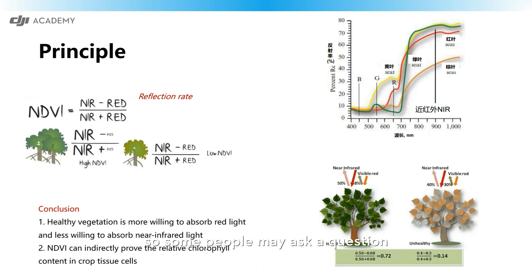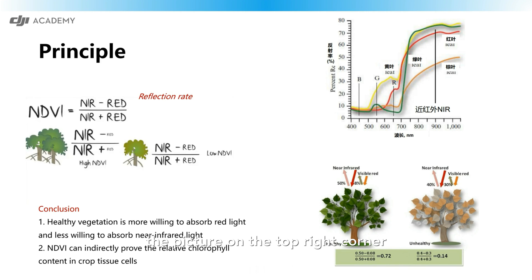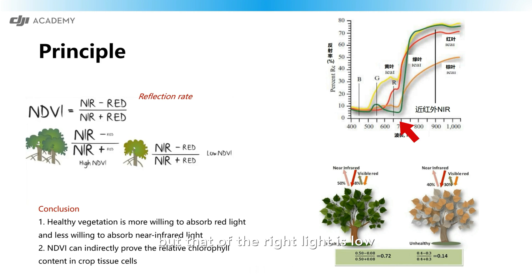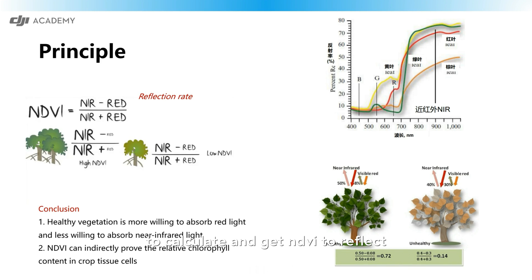Some people may ask: why do we use near-infrared light and red light in this formula? As you can see in the picture on the top right corner, which shows the reflection rate for different lights, the reflection rate of near-infrared light is high but that of red light is low. So we use this formula to calculate NDVI to reflect the health status of the vegetation.